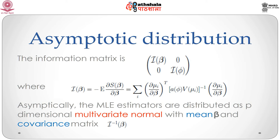The asymptotic distribution of beta and phi can be calculated by observing that the information matrix for beta and phi is a block diagonal matrix of the form diag(I_beta, I_phi), where I_beta equals minus the expectation of del s(beta) / del beta, equal to sum_i del mu_i / del beta' * [a(phi) * v(mu_i)]^{-1} * del mu_i / del beta. Asymptotically, the ML estimators will be distributed as a p-dimensional multivariate normal with true mean beta and covariance matrix I_beta^{-1}. In a subsequent module we should look more closely at the details of solution of these score equations.